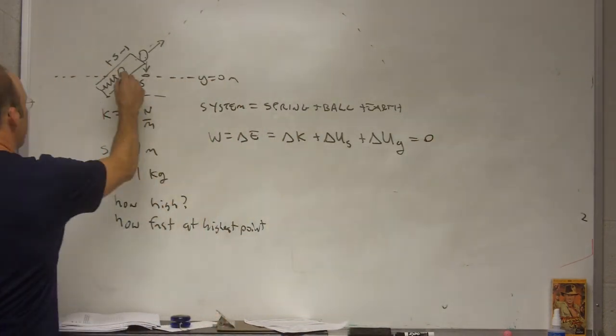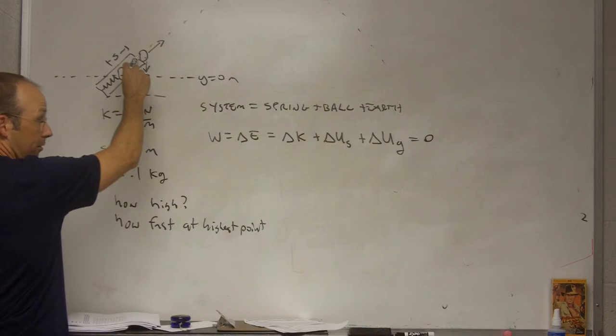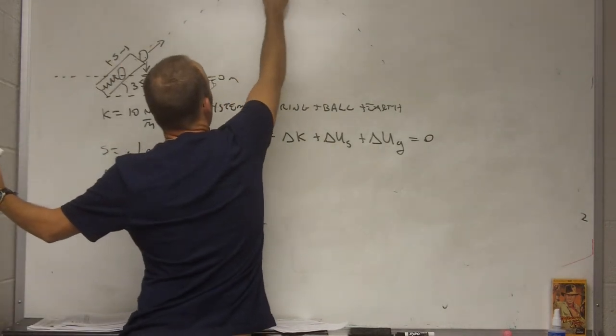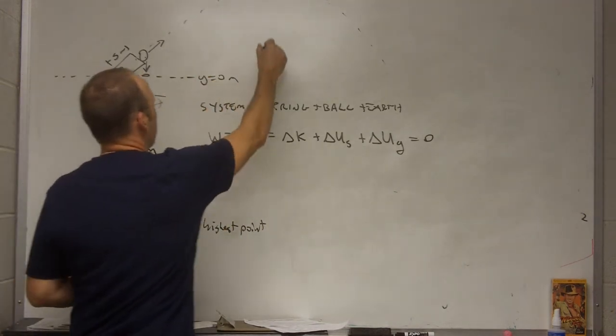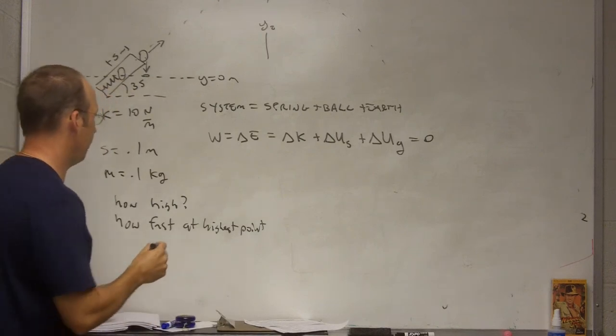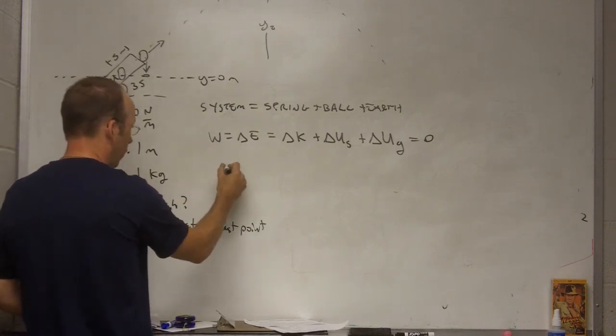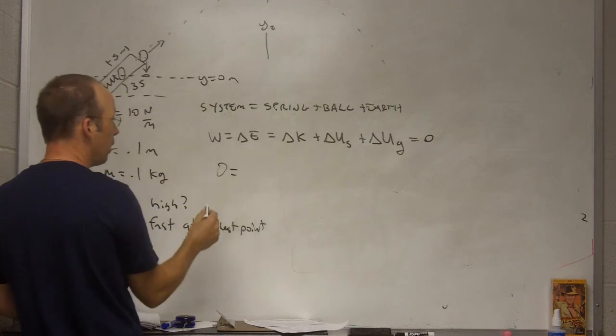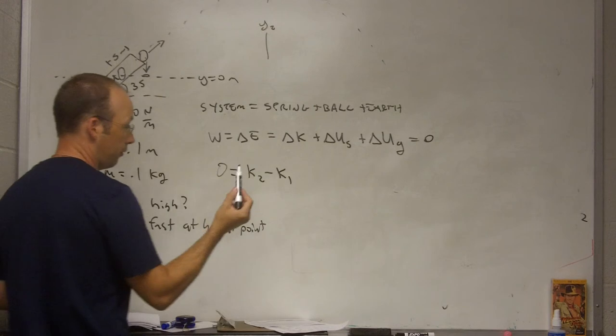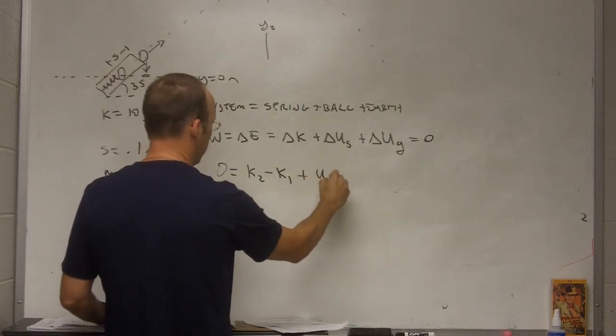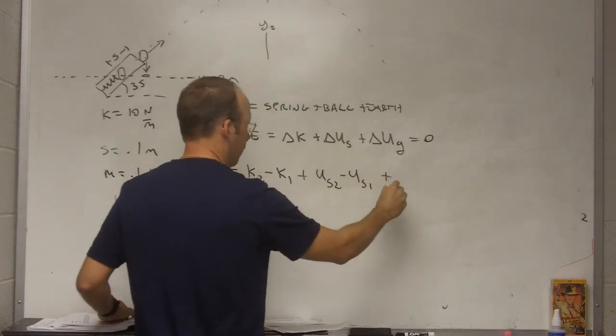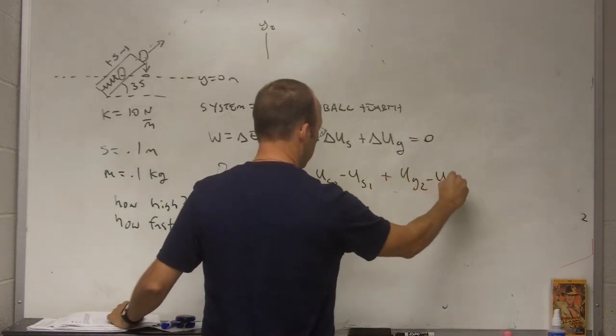So, let's call this position one, and I'm going to skip this. I don't even care about this position right here. I just want to find up here, moving that way, and this is position two. And that's going to be y2, which is this height. Okay, so let's just start putting in our stuff. We already had the work at zero. The change in kinetic is going to be k2 minus k1. Spring potential energy is going to be us2 minus us1 plus ug2 minus ug1.